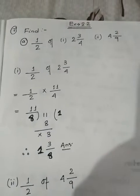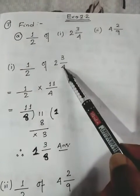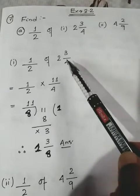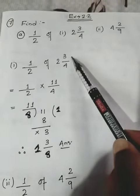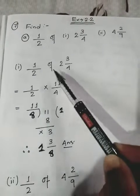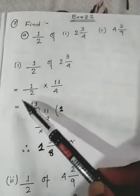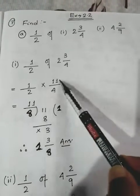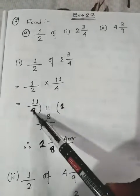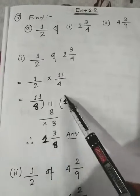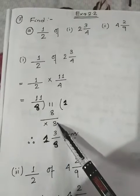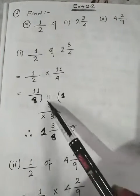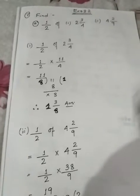First solve 1/2 of 2 3/4. Convert to improper form: 4 × 2 = 8, 8 + 3 = 11, so 11/4. In place of 'of' we use multiplication, so 1/2 × 11/4 = 11/8. Divide: 8 × 1 = 8, 11 − 8 = 3, so the final answer is 1 3/8.